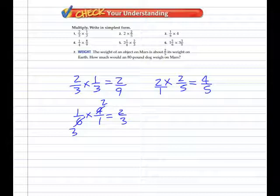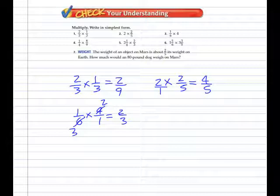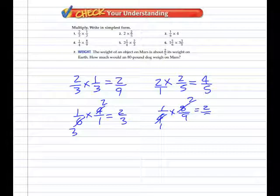That answer didn't seem right at first, but apparently it is. Number four: one-fourth times eight-ninths. Can we simplify? Yes — divide by four and divide by four. The answer is two-ninths. One times two for the numerator; one times nine for the denominator.